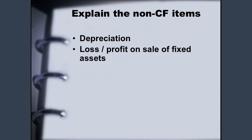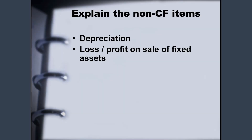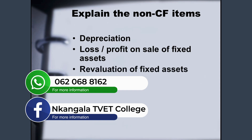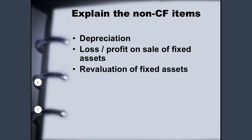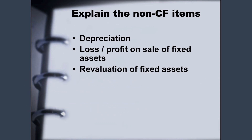Loss or profit on sale of fixed assets — when you sell assets, you can either make a loss or a profit. We'll do an activity to see how this profit or loss arises when it comes to the sale of fixed assets. Revaluation of fixed assets — for example, land needs to be revalued after a certain period. It is very important to check the value of the land after a certain period of time.